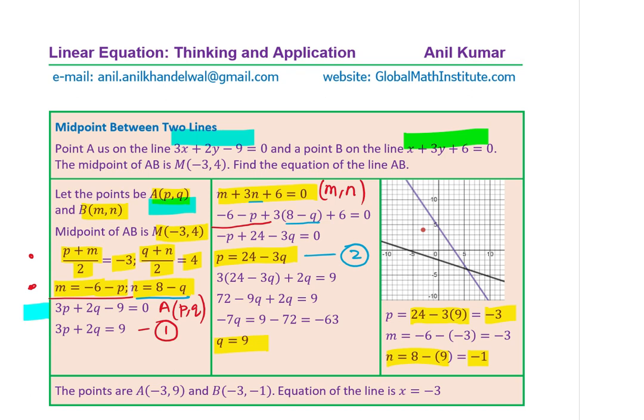And now we can find the value of M also since M is related with P. M is -P minus 6. So M is -6 minus (-3), which becomes -3. So we got all the values.